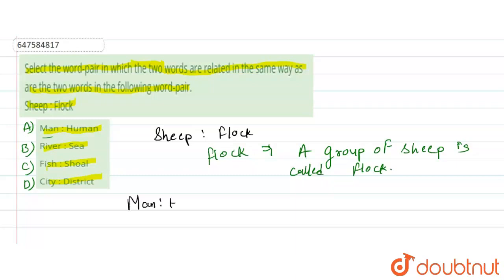Man and human. So, this is what will happen: a group of man is called human.